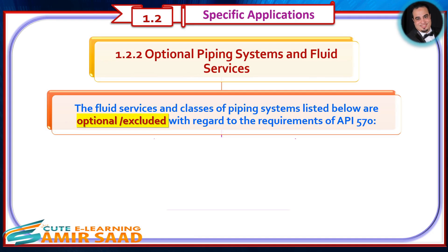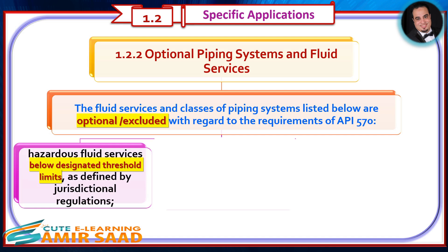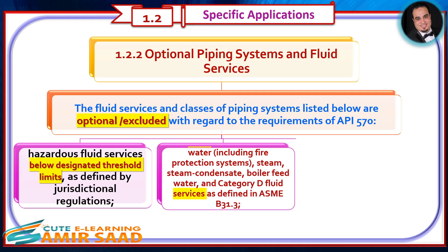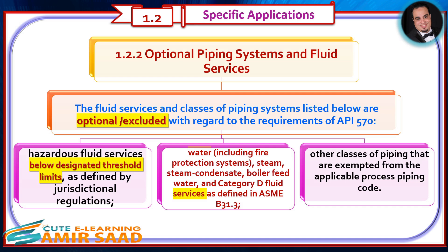Optional Piping Systems and Fluid Services: The fluid services and classes of piping systems listed below are optional or excluded with regard to the requirements of API 570. These include hazardous fluid services below designated threshold limits as defined by jurisdictional regulations; water including fire protection systems; steam, steam condensate, boiler feed water; and Category D fluid services as defined in ASME B31.3. Other classes of piping exempted from the applicable process piping code are also excluded.